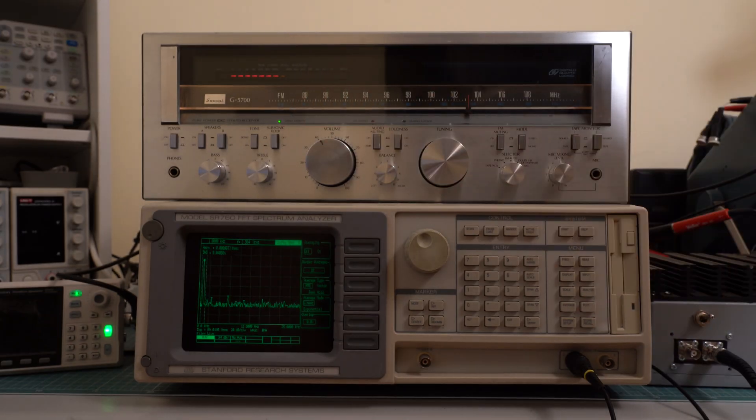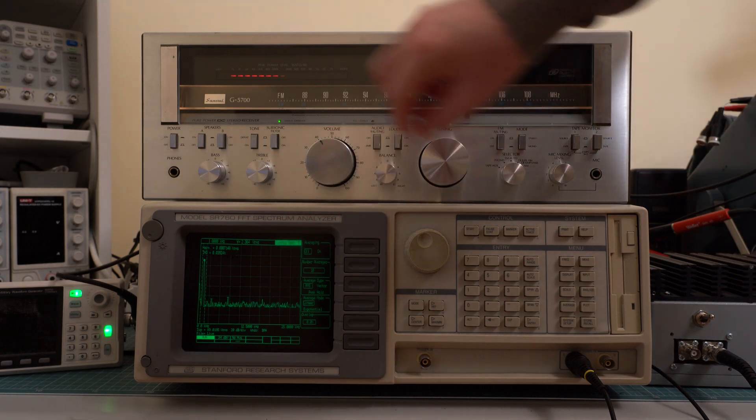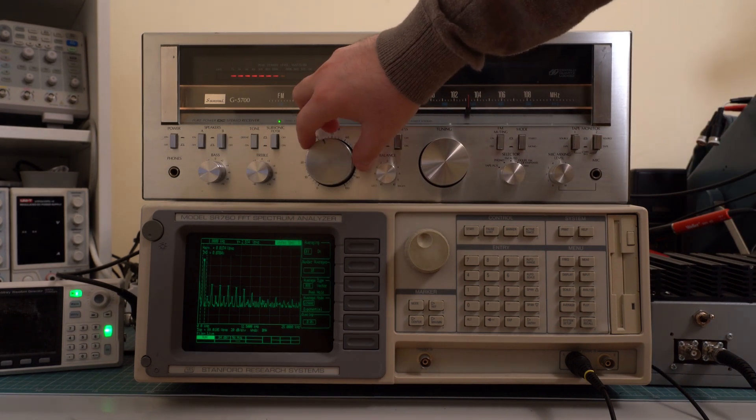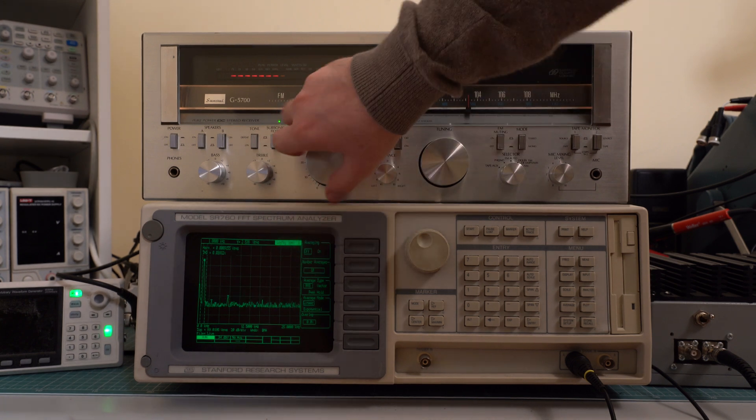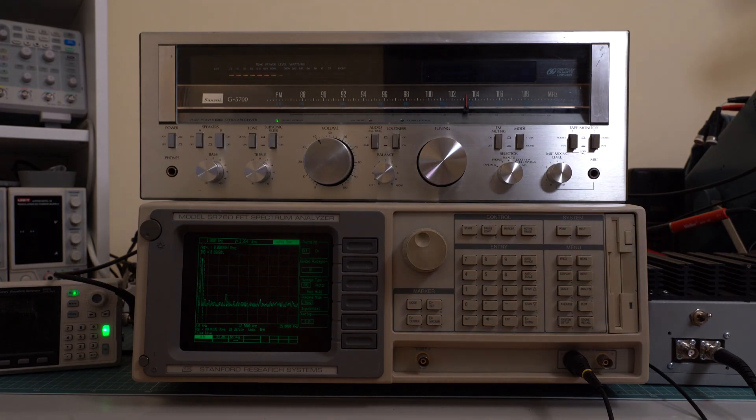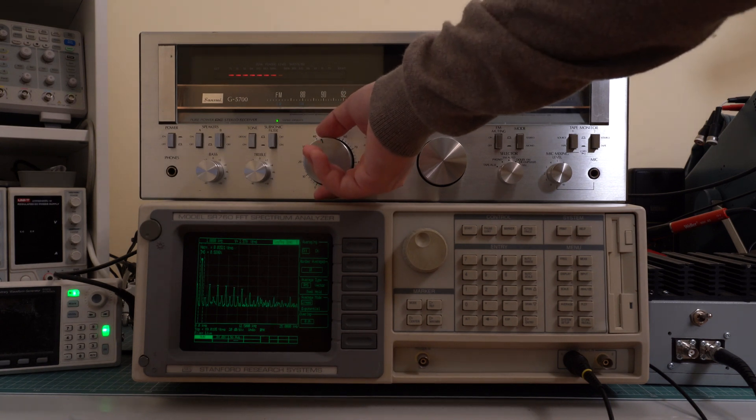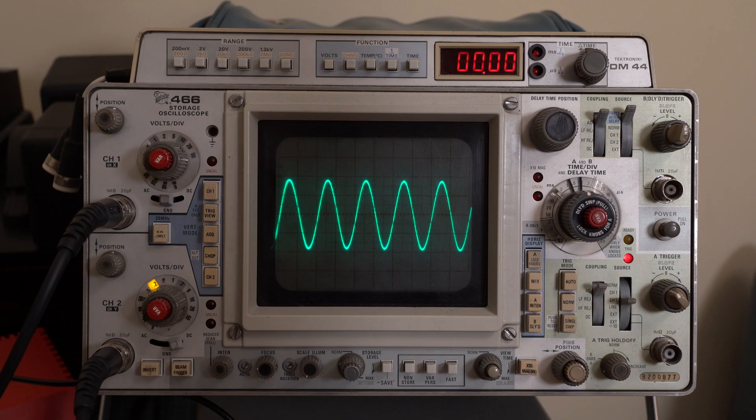Interestingly enough, one notch in volume makes all the difference in the world. So here it's clean and here it's quite distorted. And this can be seen both on the spectrum analyzer and on the oscilloscope. So this is clean and this is distorted. And once again, this is clean and this is distorted.